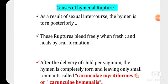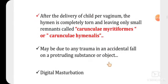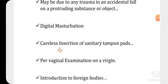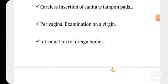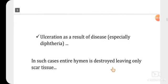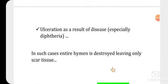After delivery of a child per vaginal, the hymen is completely torn, leaving only remnants called carunculae myrtiformes or carunculae hymenales — these are the terms given to the remnants remaining after complete delivery. Other causes of hymen rupture include accidental falls, digital masturbation, careless insertion of sanitary tampons and pads, per vaginal examination on a virgin female, introduction of a foreign body into the vaginal opening, and ulceration from diseases such as Corynebacterium diphtheria.